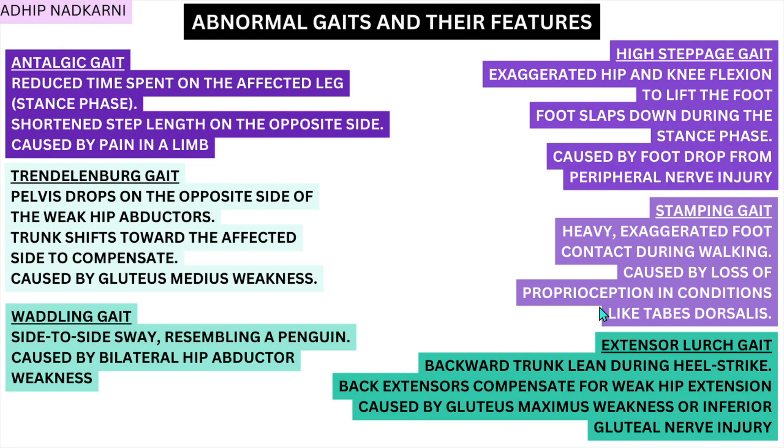Starting with antalgic gait: you see reduced time spent on the affected leg — that is your stance phase — and a shorter step length on the opposite side. The leg which is in stance phase is the painful leg and the person does not want to put a lot of weight on it. It is a simple antalgic, meaning painful gait, and you see a classic limp.